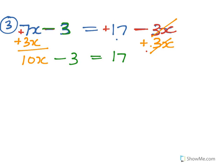Okay, now we've got to get rid of the 3. So that's a minus 3, so I've got plus 3 plus 3, because the 3 is furthest away from the x. They cancel. 10x equals 17 plus 3 is 20.